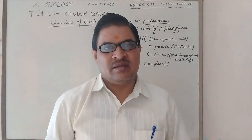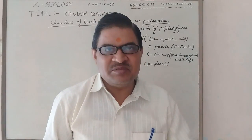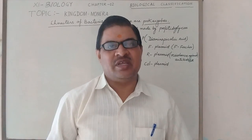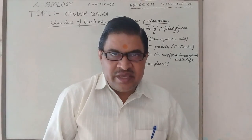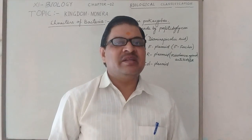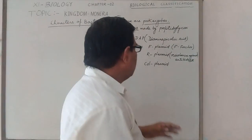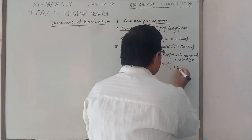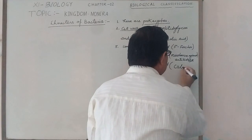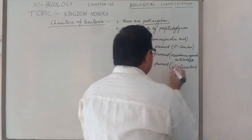If a bacterium cell contains R-plasmid, then that bacterium cell resists the antibiotic, so in cases of disease, a cure may not be possible. R-plasmid produces a type of toxin, like colicin toxin produced by Col-plasmid.